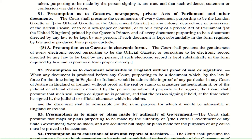Section 83 — Presumption as to maps or plans made by authority of government. If a map or plan is made by the central government, state government, or an organization or authority working under them, everything in that map or plan is deemed to be accepted and accurate. However, if that map or plan is made for a specific purpose — for example, for a litigation — then it has to be proved that the particular map is accurate. A general map or plan is assumed to be accurate, but one made for a specific purpose must be proved accurate.